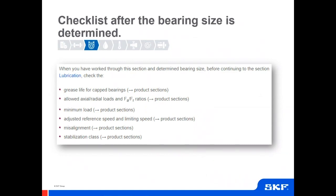The former vague term 'shock load' is consistently replaced by 'peak load', defined as a high load acting for a short period of time. Such a peak load may not influence the mean load used in the fatigue life calculation. The amplitude F-maximum shall be evaluated against the bearing static load rating C0 using a suitable static safety factor S0. As a reminder, a checklist at the end of the chapter covers grease life for capped bearings, allowed axial to radial load ratio, minimum load requirements, adjusted reference speed and limiting speed, misalignment, and stabilization clause for temperature.